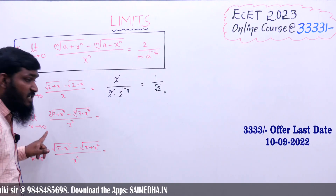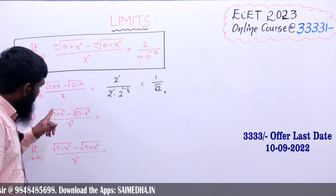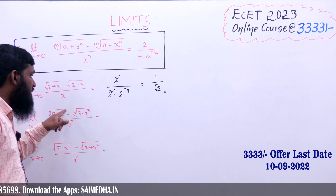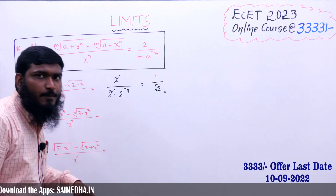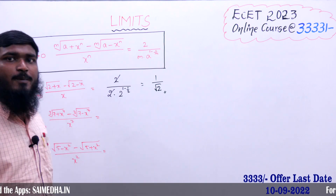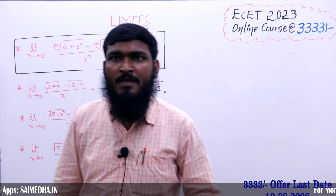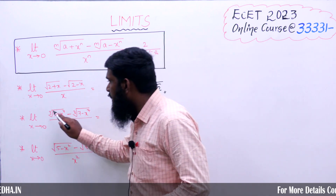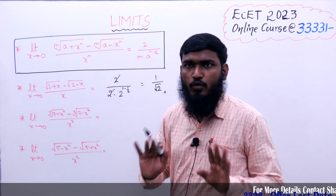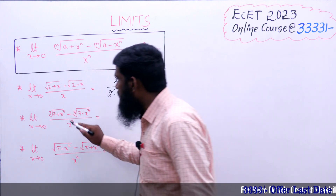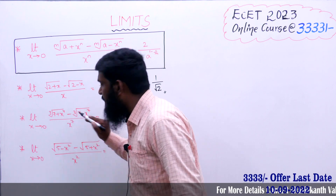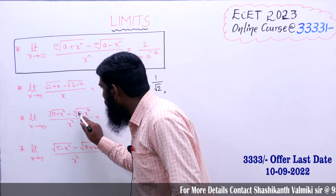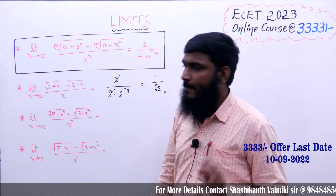Next question: limit x tends to 0 of cube root of (7 + x^7) minus cube root of (7 - x^7), divided by x^7. Let us check the conditions: both terms have cube root — roots are the same. The x powers are x^7, x^7, x^7 — all the same. And the a value equals 7.